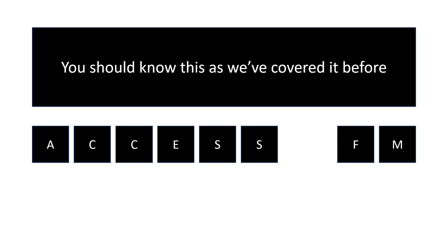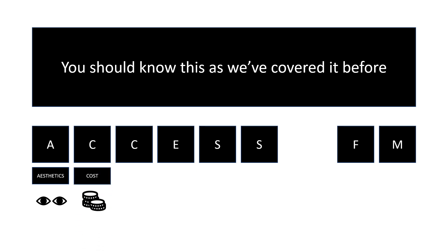The first letter is A, which stands for aesthetics — all about how things look. The second letter is C, which stands for cost — all about the money: how much they cost, is it good value, is it good value compared to other similar products? The second C stands for customer — whoever is going to buy that product. We always have to think about the customer because we're designing products for customers, not for ourselves. We're designing them to be commercially viable so that you could sell them and make money from it.